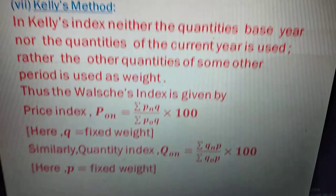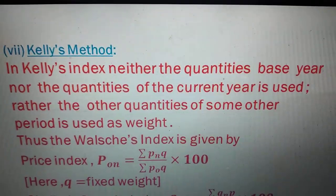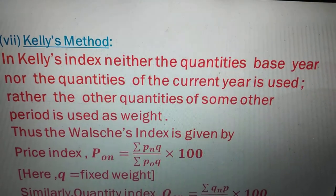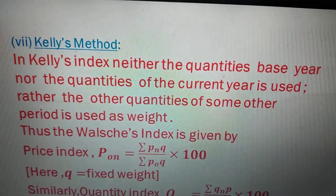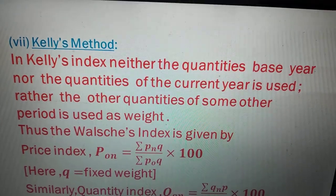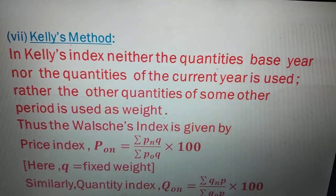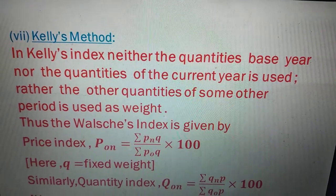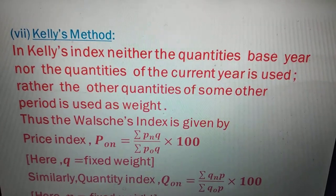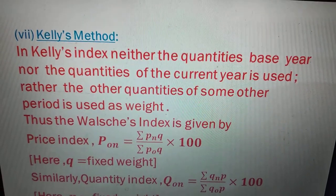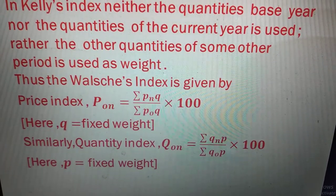Next is Kelly's method. In Kelly's index, neither the quantities of the base year nor the quantities of the current year are used. Rather, the quantities of some other period are used as weight. Thus Kelly's price index is given by: P-suffix-on equals summation of p-suffix-n multiplied by q, divided by summation of p-suffix-o multiplied by q, then multiplied by 100.